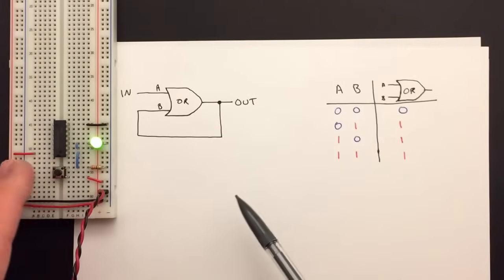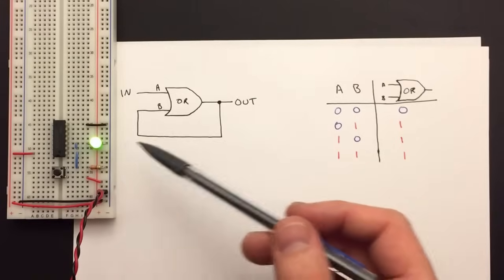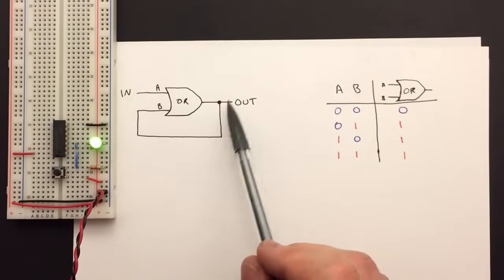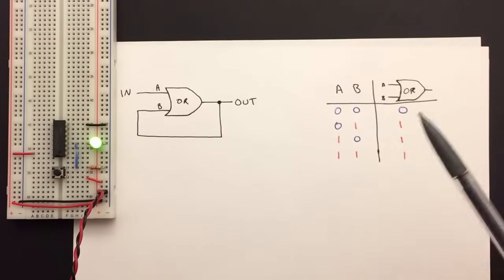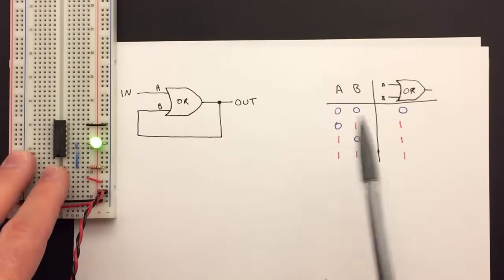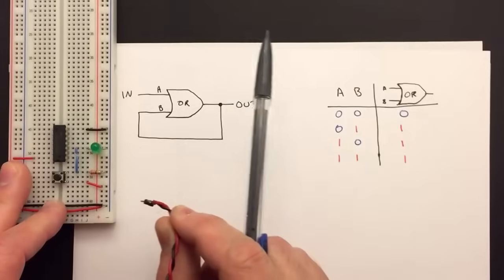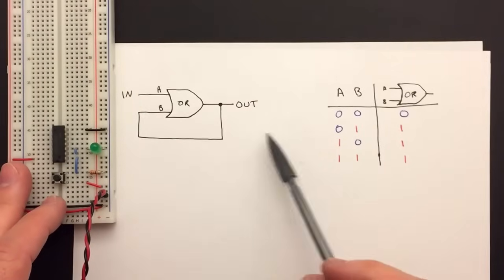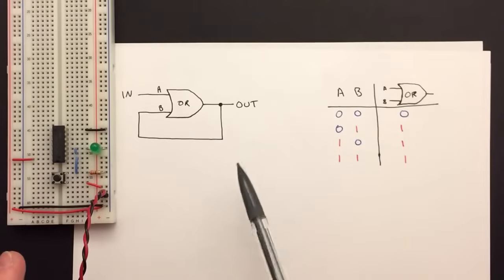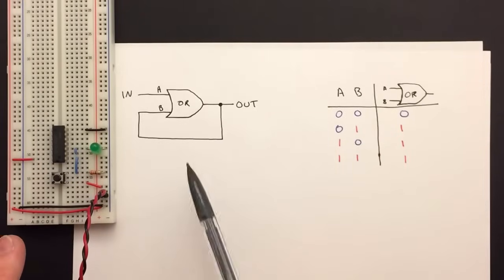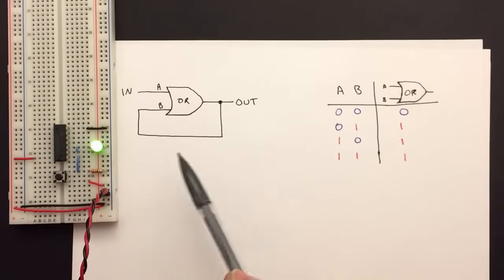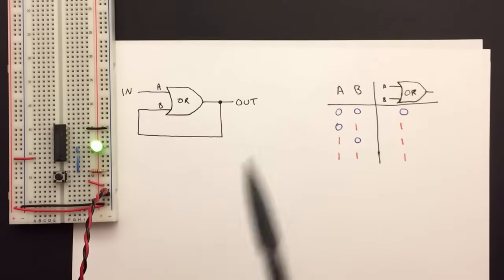In fact, if I keep pushing the button, there's really nothing I can do to get this to turn off. Once this input turns on, even if it turns off later, the output stays on and it latches on. The only way to reset this is to disconnect power from the entire circuit. Then of course it starts out at zero again. But if at any point after this thing is powered up that input ever goes to a one, even momentarily, that output latches on and remembers that that input was at one point a one.